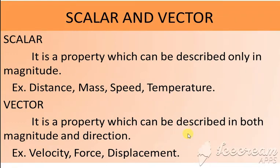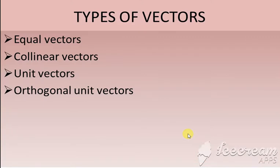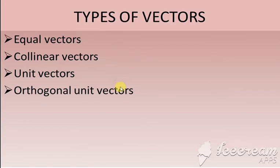The next topic is types of vectors. We have various types of vectors. The first one is equal vectors, next is collinear vectors, then unit vectors and orthogonal unit vectors. For considering these types of vectors, we are going to consider two vectors, namely A and B.